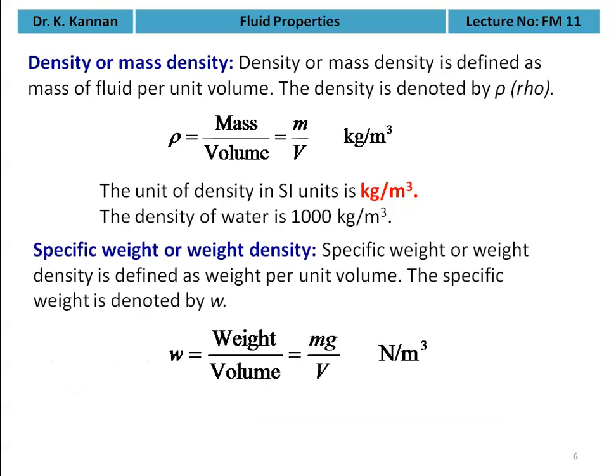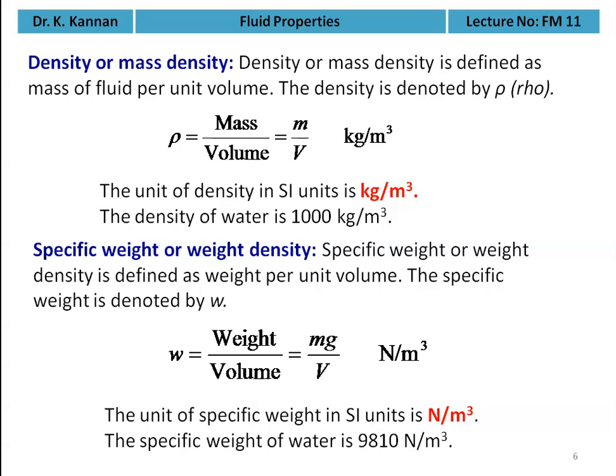Specific weight or weight density is defined as the weight per unit volume, denoted by small w. So w = Weight / Volume = mg / V, with the unit Newton per meter cube. The specific weight of water is 9810 N/m³, i.e., 1000 × 9.81.